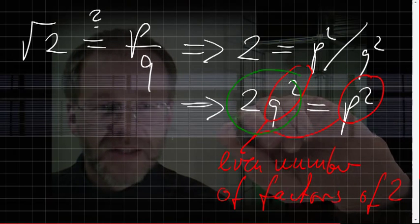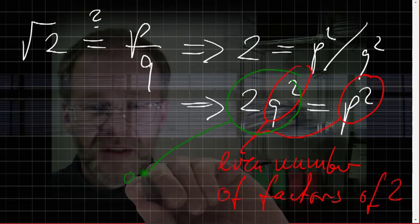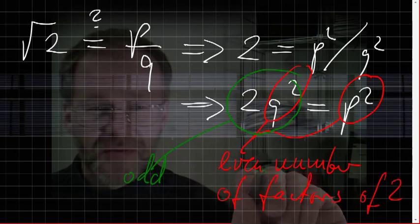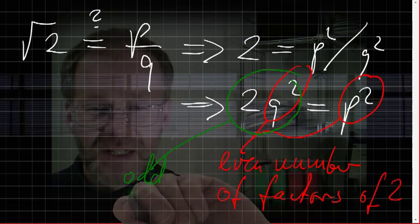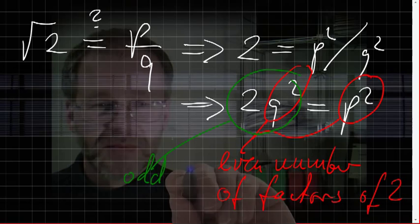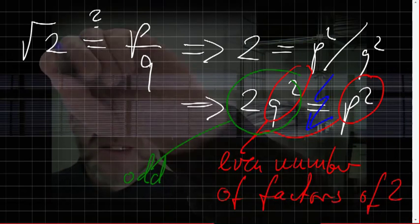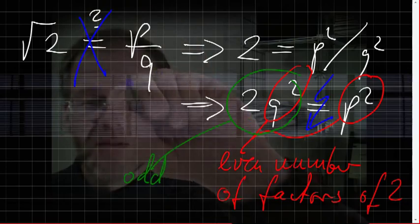But on the left-hand side there is an additional number 2, meaning the total number of factors of 2 on the left-hand side is odd and not even. So this cannot be true and hence this can never be true.